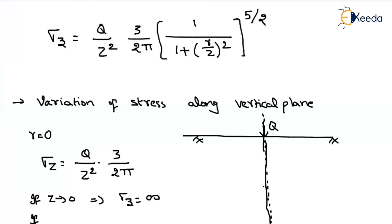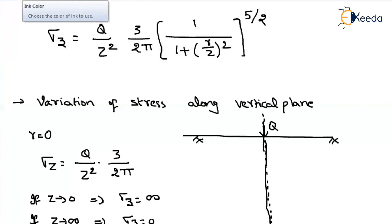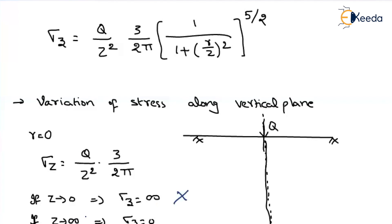If you go very deep below the ground surface, z will approach infinity, and sigma z will equal 0. Are these two cases physically possible? At z equal to 0 — that is, just on the soil surface under the load — the stress being infinity is not realistic; we don't consider it. Similarly, we cannot go to a very large depth where stress becomes exactly 0 in practice. According to the equation, only at infinite depth does stress equal 0.